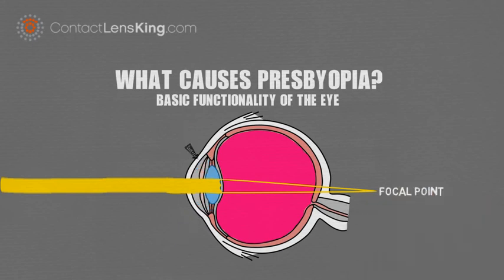The eye's natural lens ability to change shape is dependent on tiny ciliary muscles, which tire with age, becoming less responsive to the rapid shape changes required to focus.